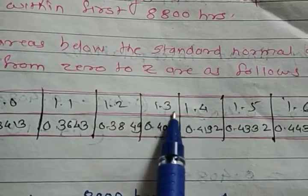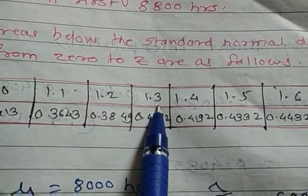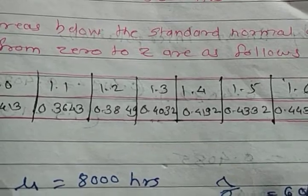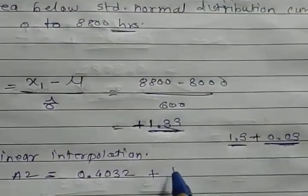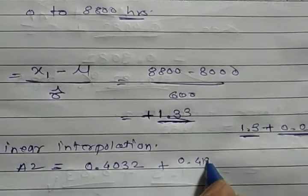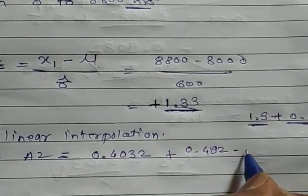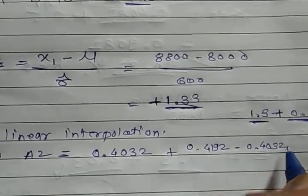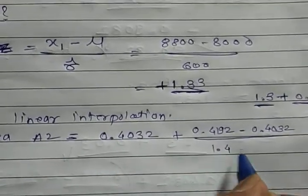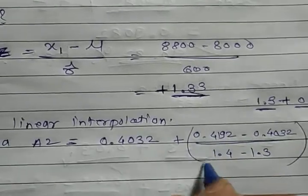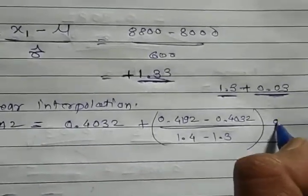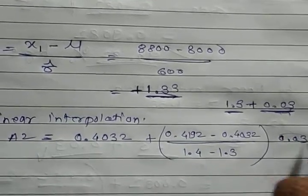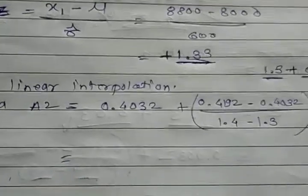As per the table, 0.4192 is the area at Z = 1.4, and 0.4032 is the area at Z = 1.3. The denominator is 1.4 - 1.3, and we multiply the whole bracket by 0.03 to find the area contribution for the 0.03 increment.